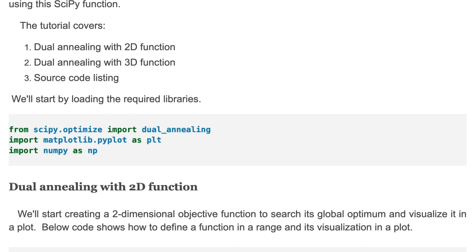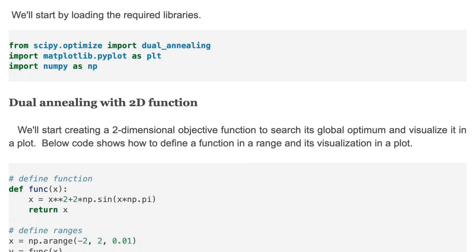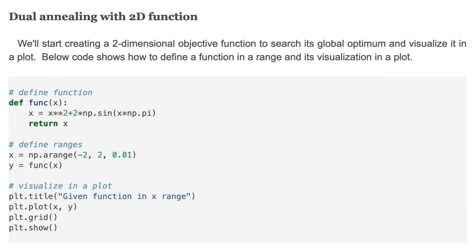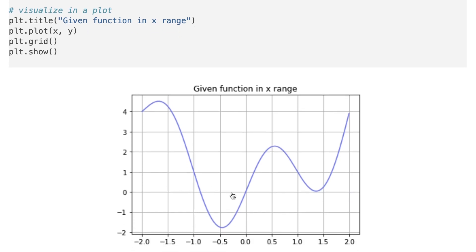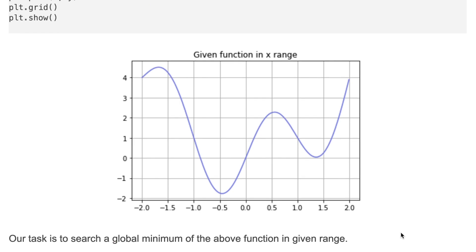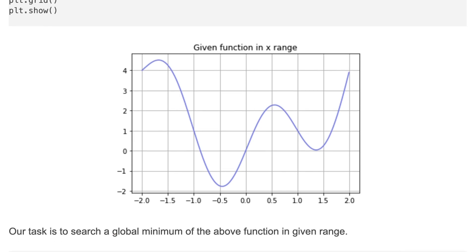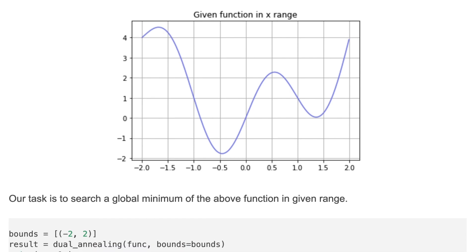We'll start by creating a two-dimensional objective function to search its global optimum and visualize it in a plot. The code below shows how to define a function in a range and visualize it in a plot. Here we define the objective function and the range, and the plot shows the shape of the objective function. Our task is to search a global minimum of the above function in a given range by using dual annealing.